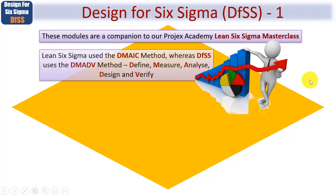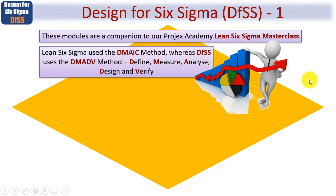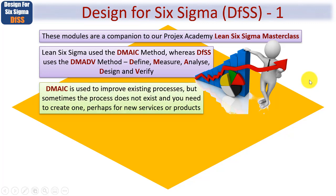Lean Six Sigma uses the DMAIC method, whereas DFSS uses the DMADV method: Define, Measure, Analyse, Design and Verify. So DMAIC is used to improve existing processes, products or services, but sometimes such a process does not exist. So you need a method to create new processes, products and services.